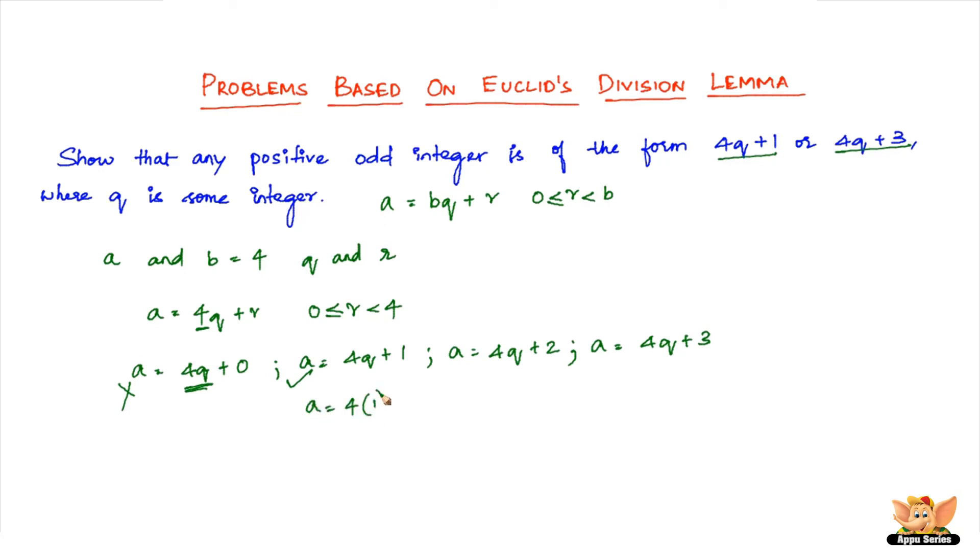Let me show you: 4×1+1=5, 4×2+1=9, 4×3+1=13, and so on.